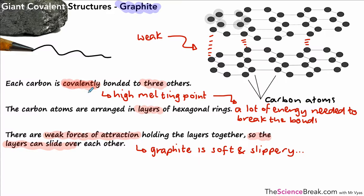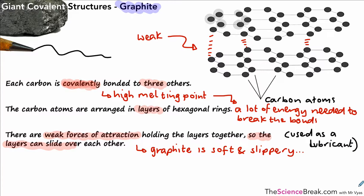Because the layers can slide, graphite is a soft and slippery substance, and it's often used as a lubricant. It's also used in pencils — when you draw a line with a pencil, you're making a line of graphite on the paper because the layers slide off the end of the pencil. Note that pencils are not actually made of lead.